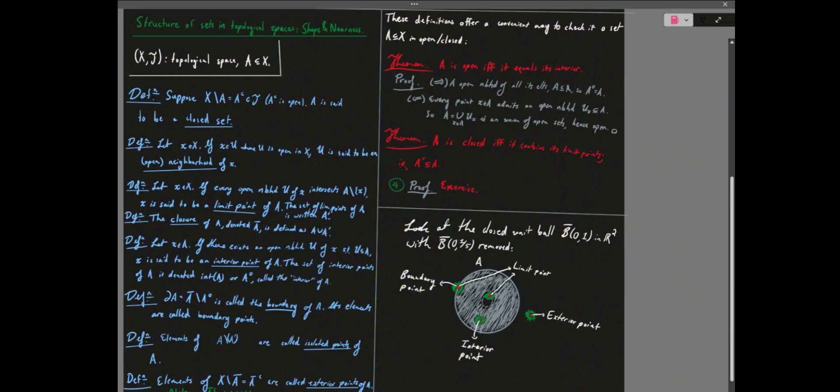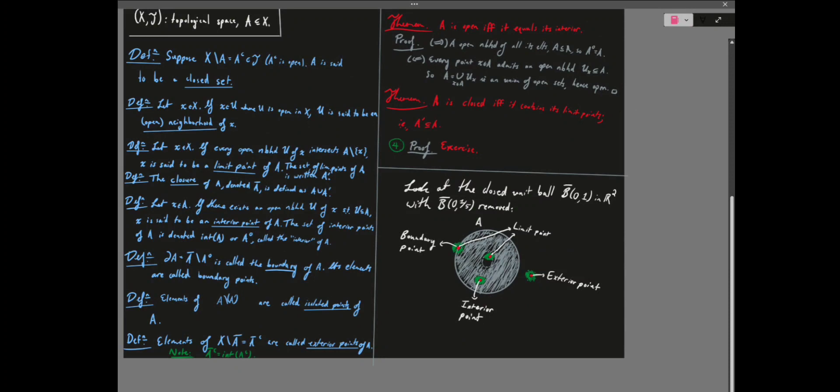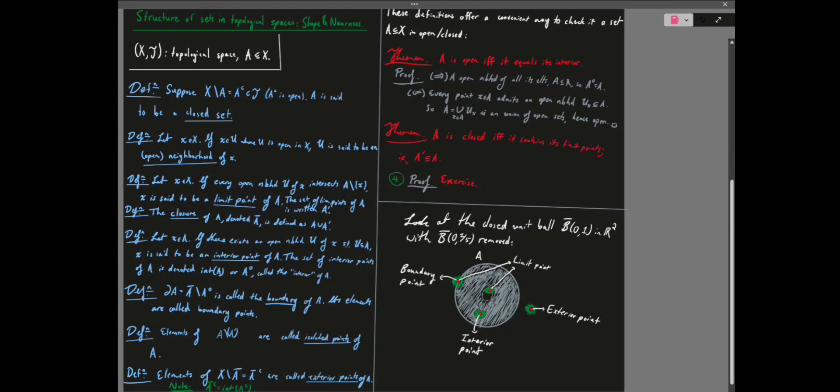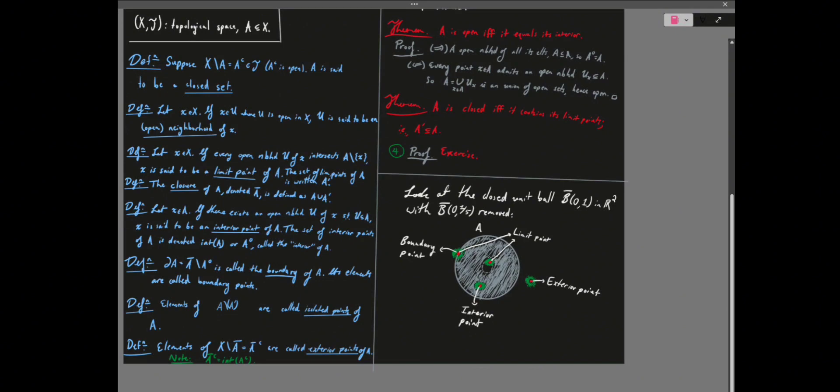Sets may be open, closed, both, or neither. Some of the points in sets might be limit points. You can take the closure of different subsets of a topological space. We talked about interior points, boundaries of sets, isolated points of sets, and exterior points of sets.